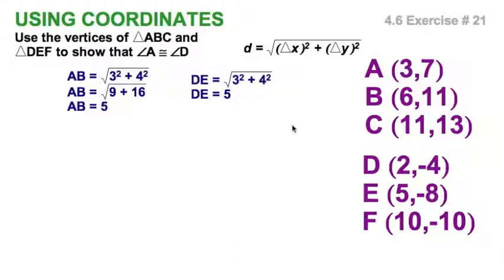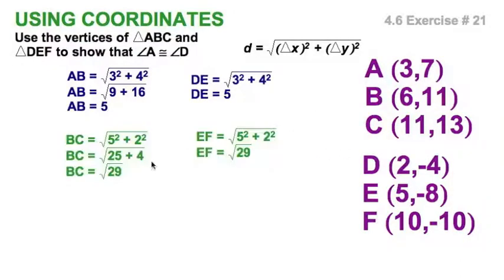So now let's continue on here with BC. So we have to compare BC and EF, and you can see there I'm coming up with radical 29.